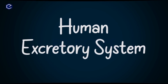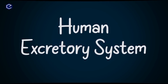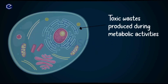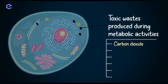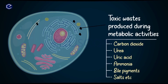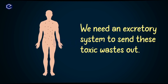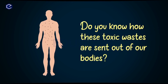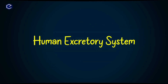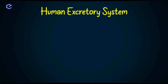We will discuss the human excretory system. Cells, while carrying out their activities, produce toxic nitrogenous substances like urea and uric acid. These compounds must be eliminated from our body. Blood collects and carries these toxic materials to the excretory system for filtration.